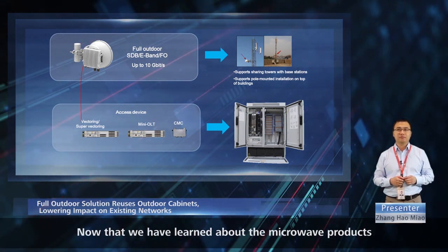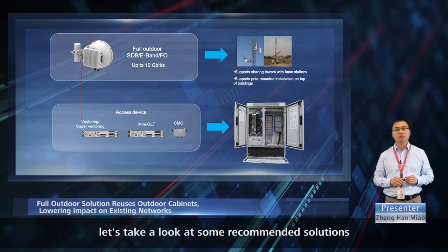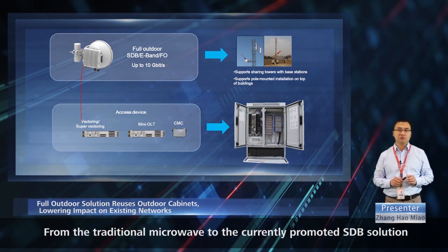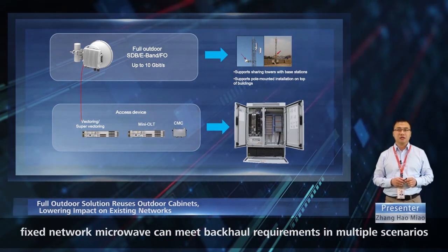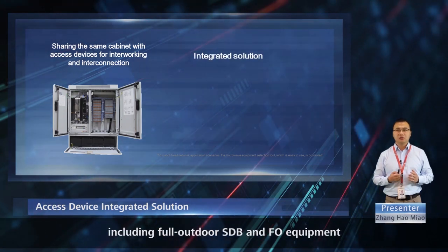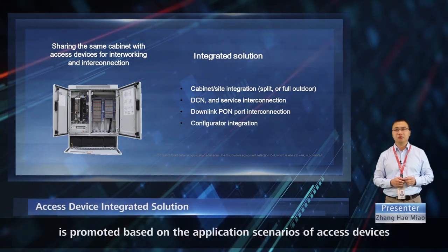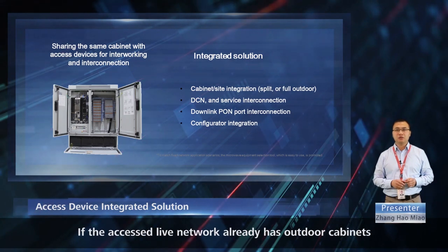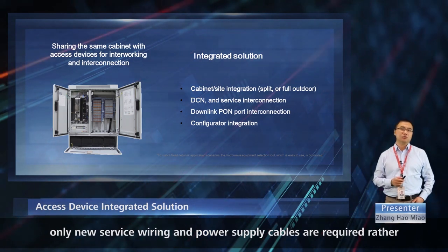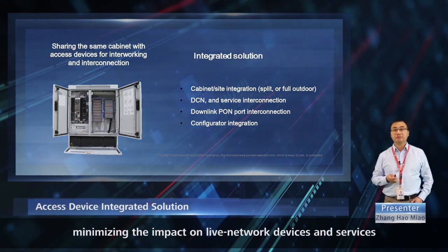Now that we have learned about the microwave products used for fixed network backhaul, let's look at recommended solutions for different transmission distances and capacity. From traditional microwave to the currently promoted SDB solution, fixed network microwave can meet backhaul requirements in multiple scenarios. The full outdoor microwave solution, including full outdoor SDB and FO equipment, is promoted based on the application scenarios of access devices. If the accessed live network already has outdoor cabinets, only new service wiring and power supply cables are required rather than an extra outdoor cabinet, minimizing the impact on live network devices and services.